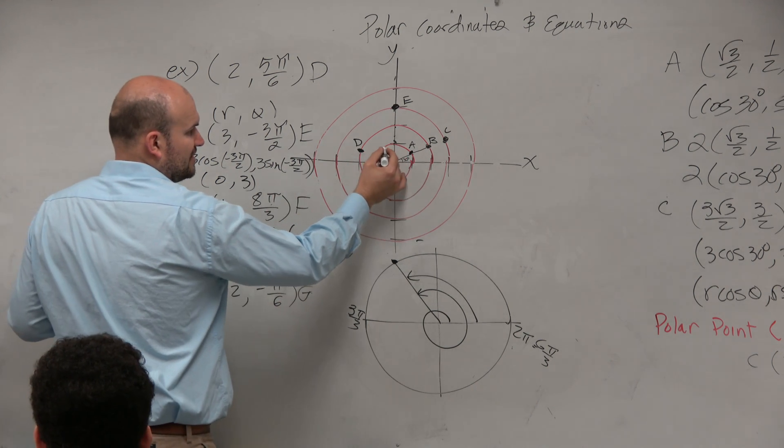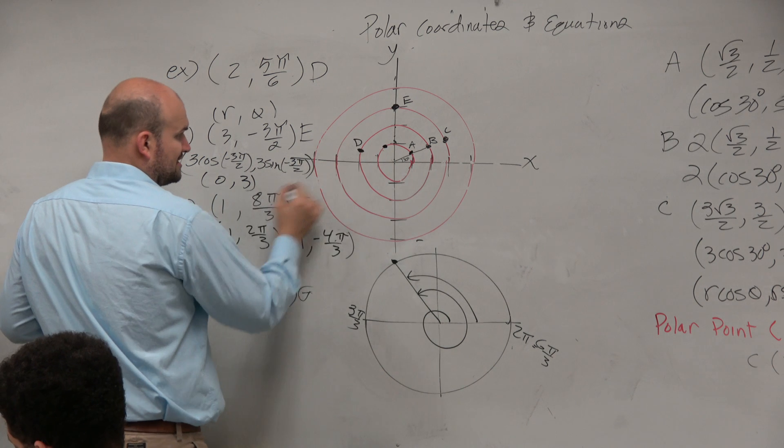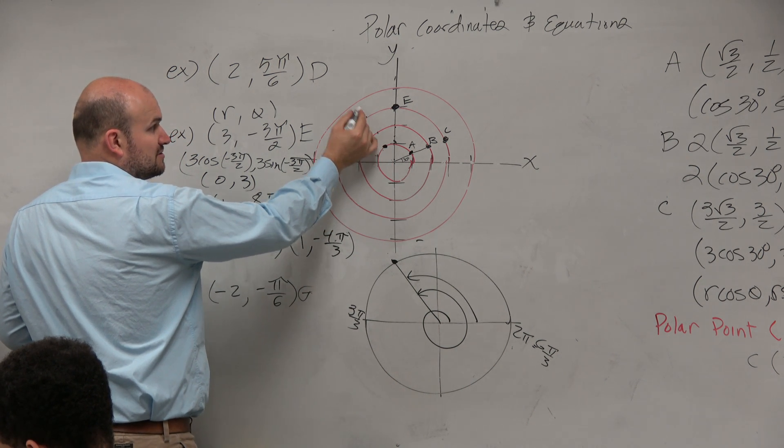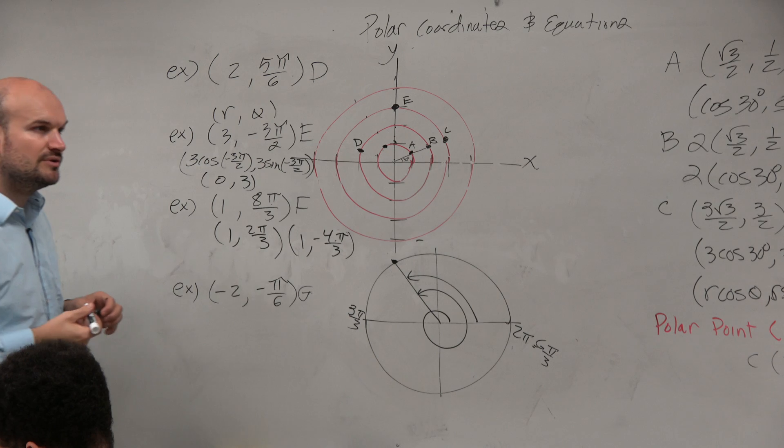So where is this point? 2 thirds. So that's right there, right? So if the radius is 2, it would be right there. Radius is 3, it would be right there. Radius is 4, it would be right there. So it really doesn't come back.